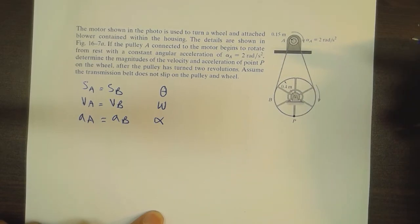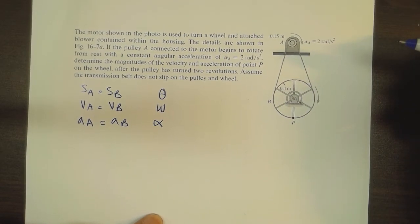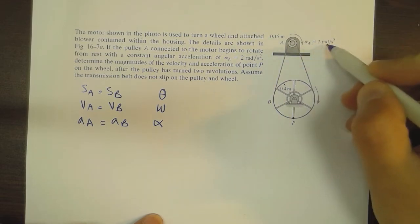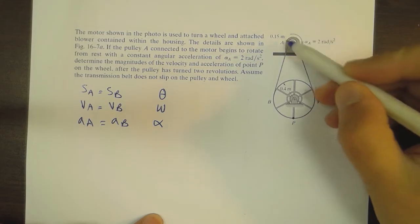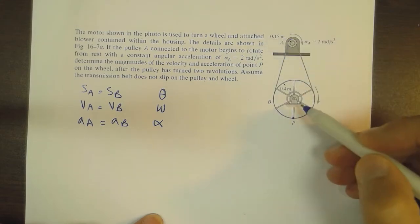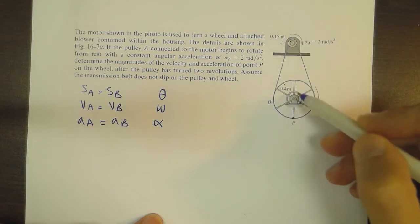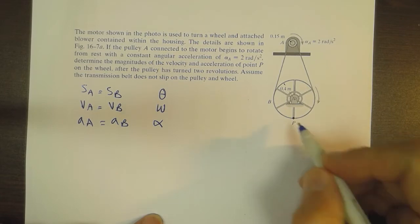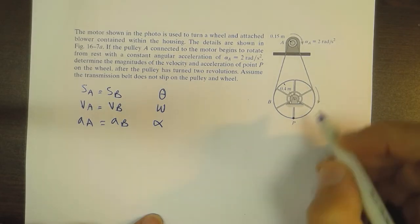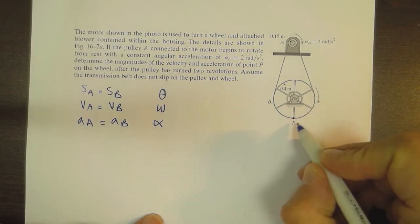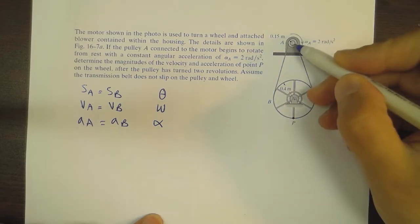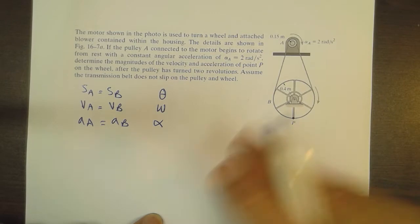Some initial data were given to us to help solve this problem. The angular acceleration is two rad/s squared, the radius of the pulley is 0.15 meters, and the radius of the wheel is 0.4 meters. What is required is to find the acceleration and the velocity of point P on the rim of wheel B after this pulley has rotated two revolutions.